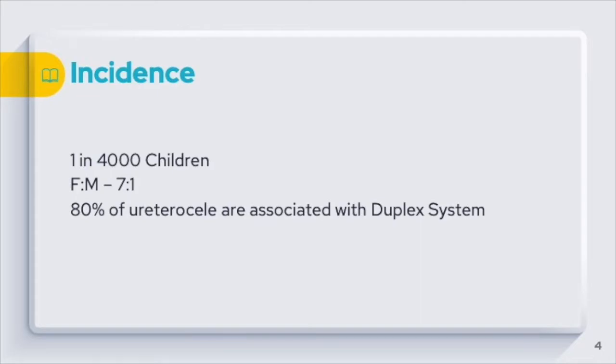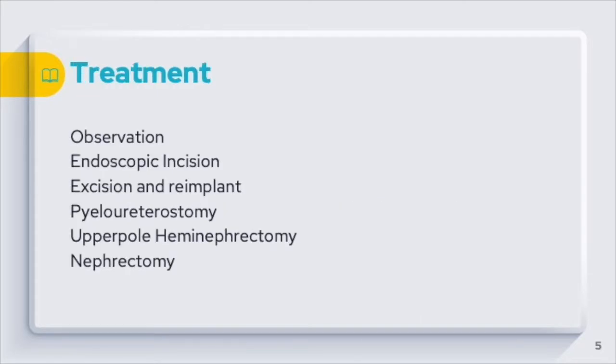80% of ureteroceles are usually associated with the duplex system. The common treatment is observation when there is not much hydronephrosis or obstruction and the patient is asymptomatic.